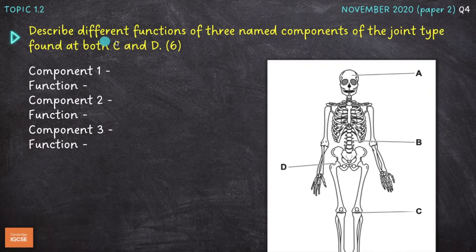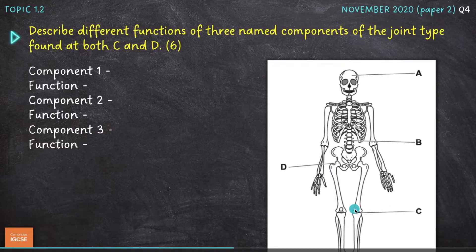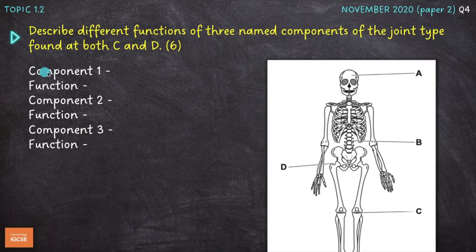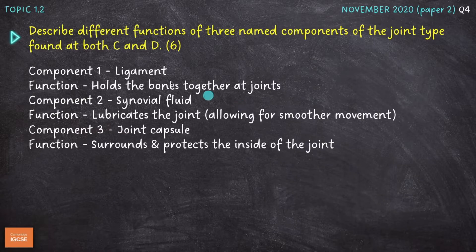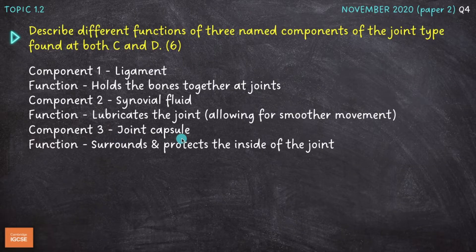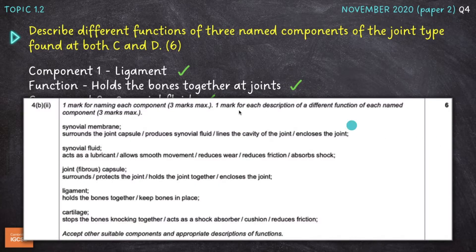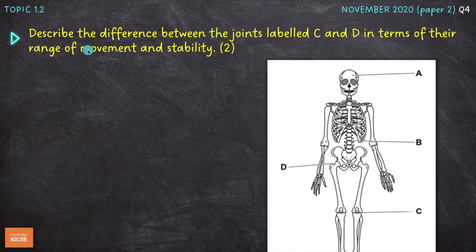Next question, topic 1.2. Describe different functions of the three named components of the joint type found at both C and D for six marks. So D, we have a ball and socket joint. C, we have a hinge joint. They're both synovial or freely movable. So again, we need to provide three components of a synovial joint and the functions of each of those components. This time, I've gone for ligament, synovial fluid and joint capsule. We won't spend very long on this question because we've already gone through exactly the same question a few moments ago. So pause the video here if you want to have a look at my answers this time or check the mark scheme against your own responses.